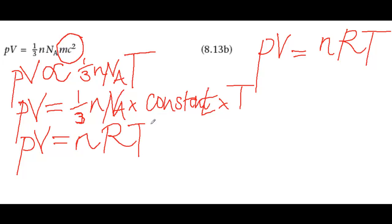Notice that we've left the n term, that's the amount of gas in moles. We've left that as a variable, but we've combined the one-third nNa and the proportionality constant into a single constant, R. And, of course, that is the ideal gas equation.